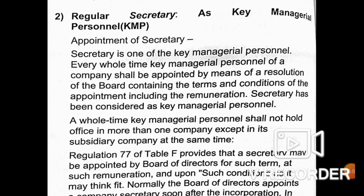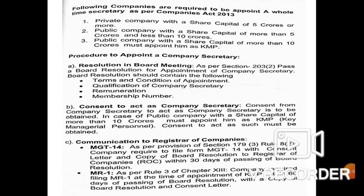After incorporation, a regular secretary is appointed as a Key Managerial Person. Every company should have a whole-time Company Secretary. A whole-time KMP shall not hold office in more than one company except in a subsidiary at the same time — so only one secretary per company. The Company Secretary is appointed by the board of directors at a remuneration decided by passing a special resolution.